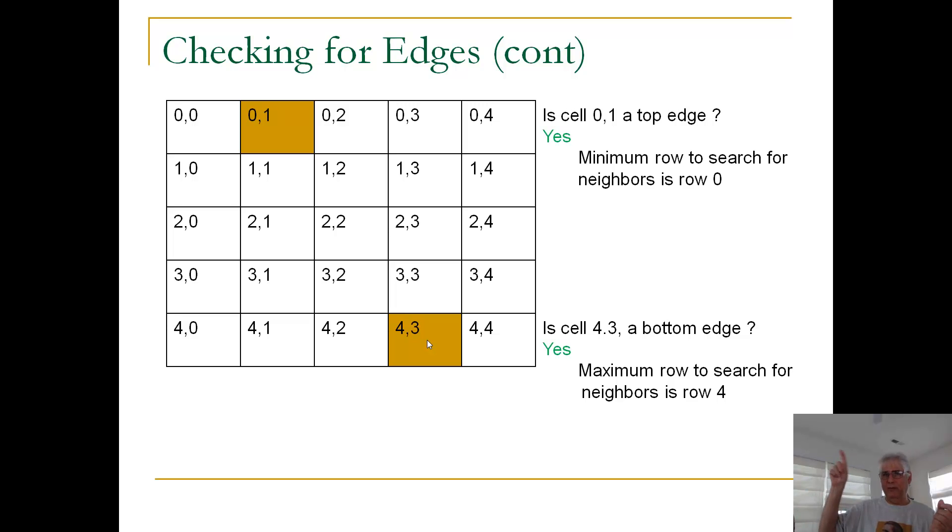Zero, one, two, three, four, five, six, seven, blah blah blah, 97, 98, 99. So if I'm in, if the row index is 99, the answer to the question is yes. And the maximum row to search for neighbors is, is row, in this case, the case of this example, row four.